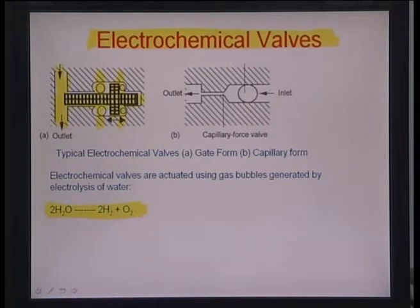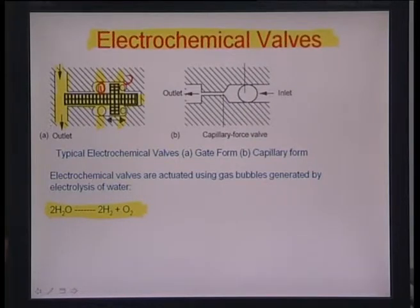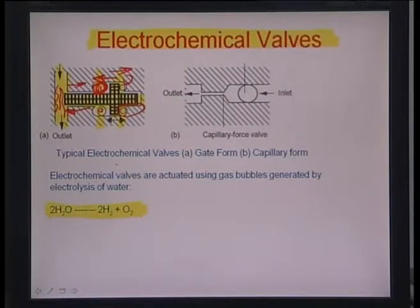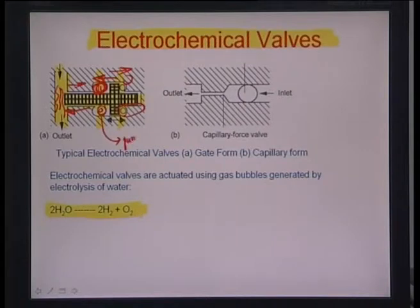If you control the differential size between bubble 1 and bubble 2, you can make this gate mechanism move back and forth. If one bubble is bigger and the other smaller, the gate pushes back, and vice versa — the flow path is blocked by this mechanism. This is an electrochemical valve because the hydrogen and oxygen bubbles are produced simply by pumping electrons, so the valve is actuated electrochemically.